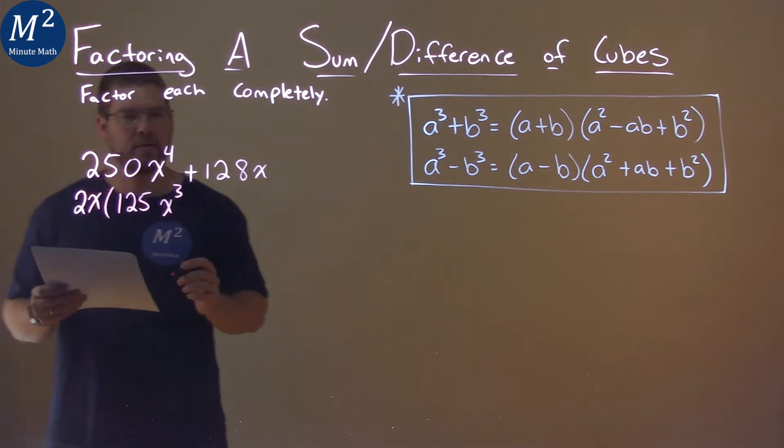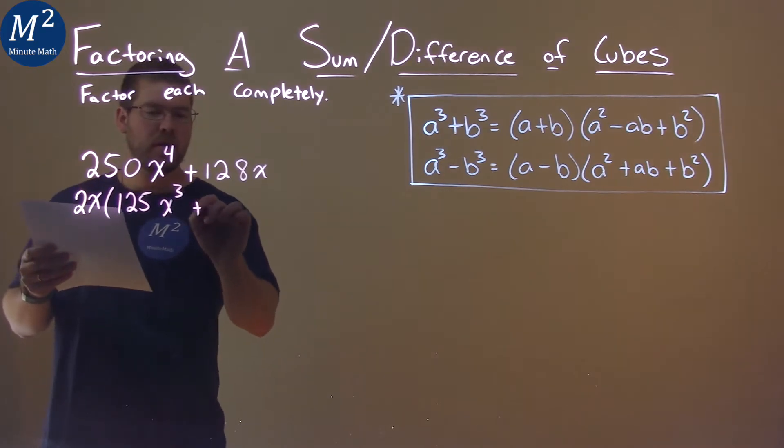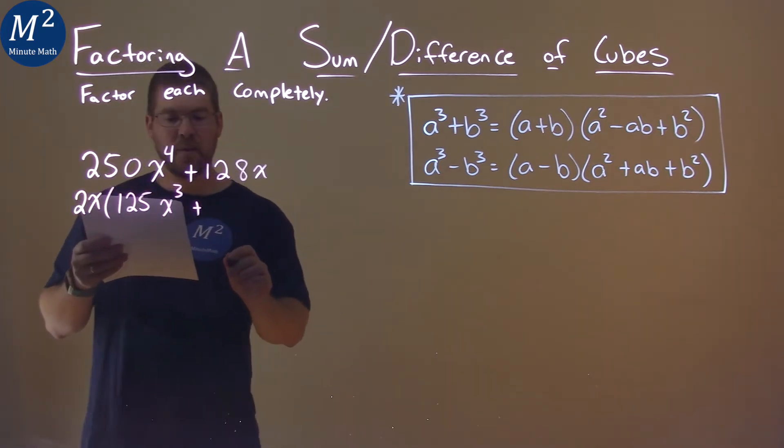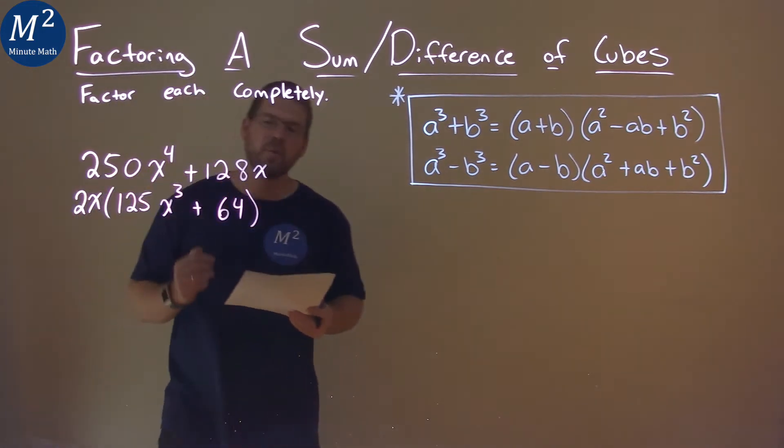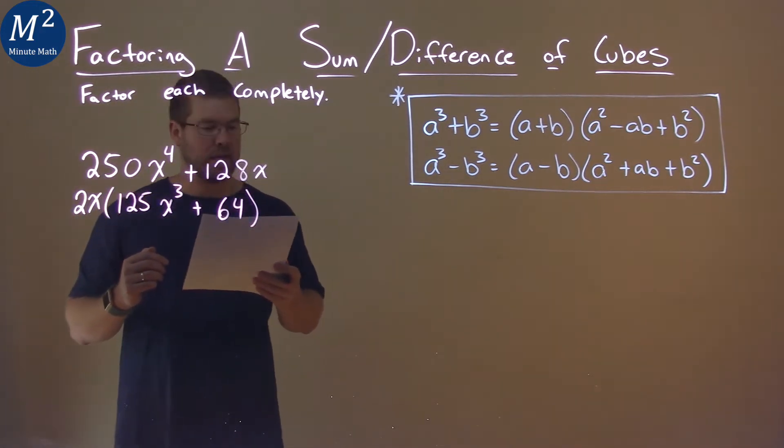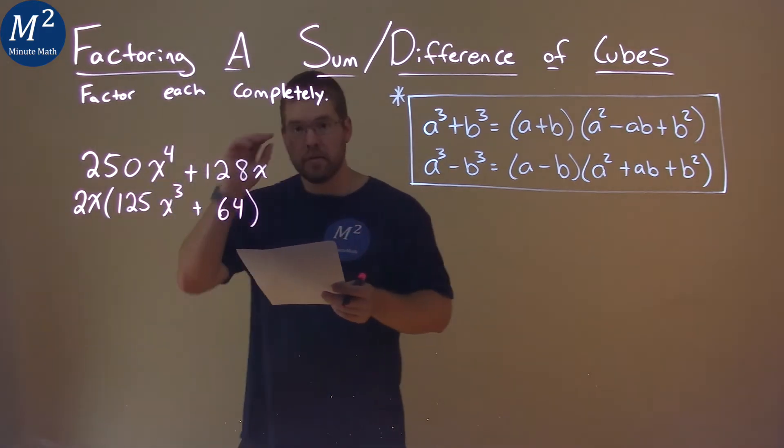pulling out an x from x to the fourth, plus 128 divided by 2 is 64, and then the x got pulled out. So we have 2x times 125x to the third plus 64.